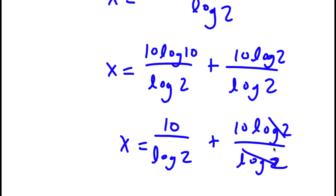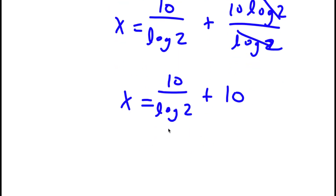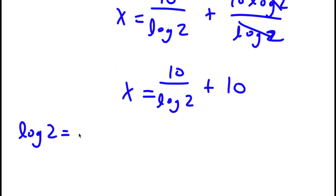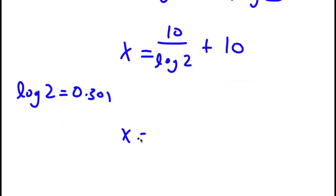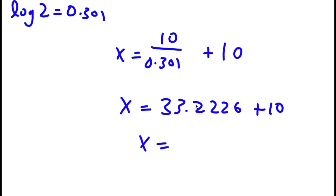And these two log 2s cancel out, so I'm left with x equals 10 over log 2 plus 10. Now log 2 is approximately 0.301, so x equals 10 over 0.301 plus 10, which is 33.2226 plus 10, giving 43.2226.